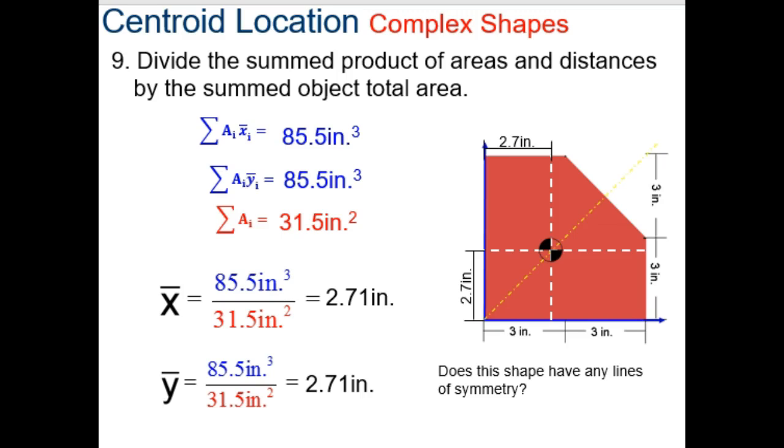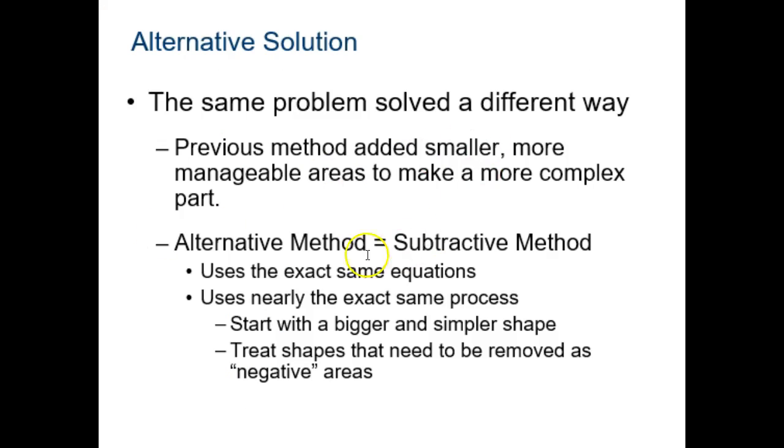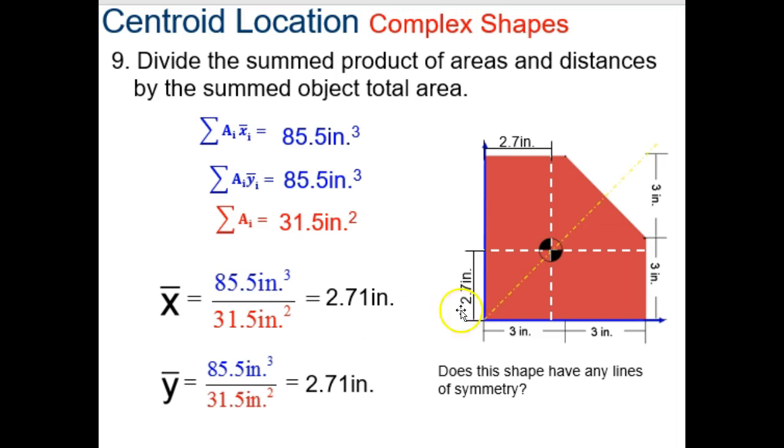So, that is how you solve complex shapes. That's actually called the additive approach. There is an alternative solution, where you do the subtractive method. So, instead of looking at this as 1, 2, 3 shapes, now you're going to look at it as one big shape, and then subtract this rectangle out of here. So, I'll deal with that in the next video. So long.